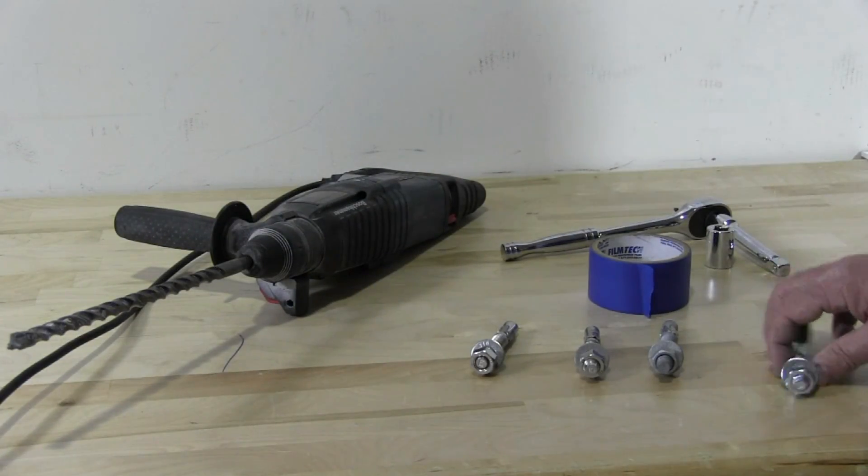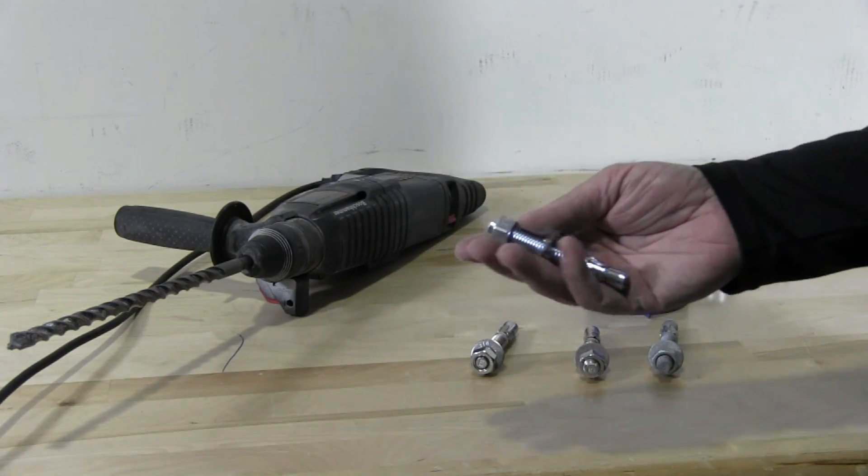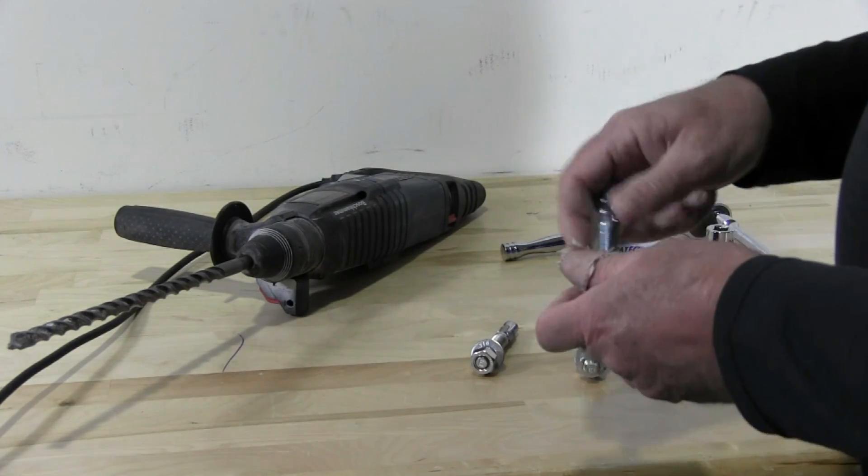Okay, so we're going to prepare to install this half inch wedge anchor. We're going to take the nut off and the washer.